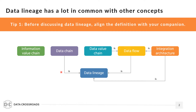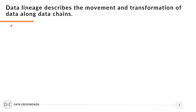Every conversation on data lineage I start with specifying the definition. So my first recommendation: before discussing data lineage, align the definition with your companion. To continue our webinar, we need to agree on a common understanding of data lineage. The common high-level definition is rather simple: data lineage describes the movement and transformation of data along data chains.